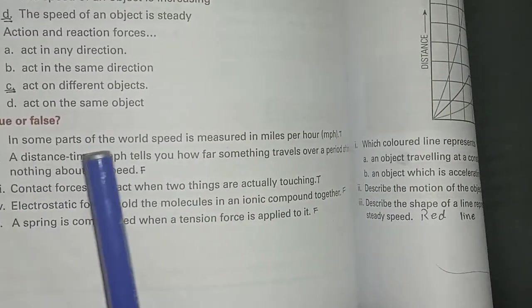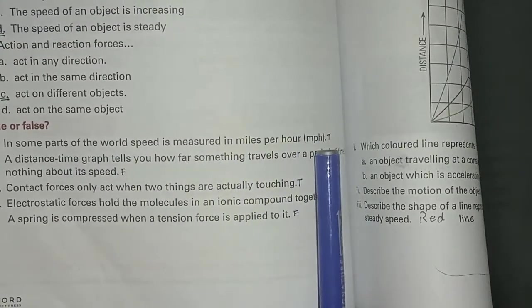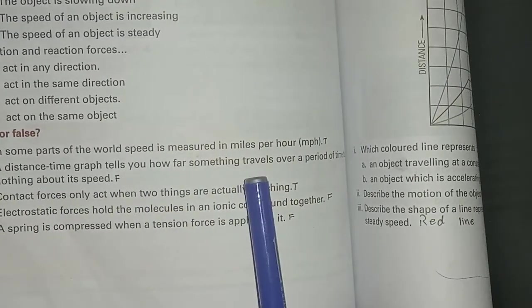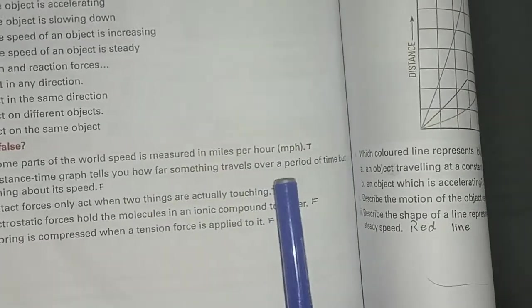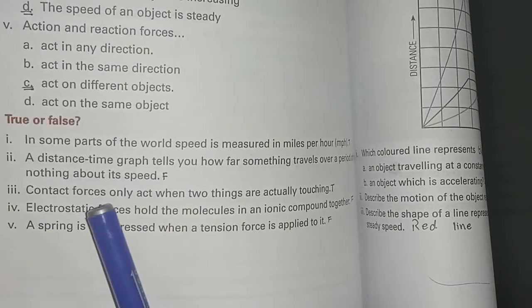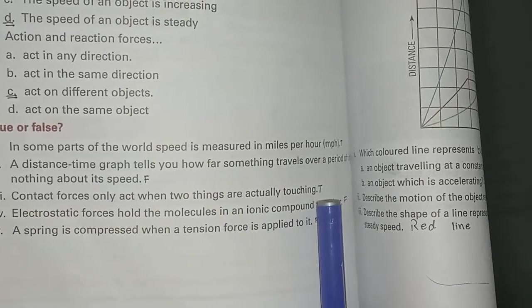Question number 2, true or false. In some parts of the world, speed is measured in miles per hour - true. A distance-time graph tells you how far something travels over a period of time but nothing about its speed - false. Contact forces only act when two things are actually touching - true.